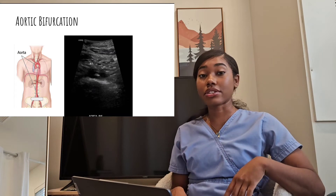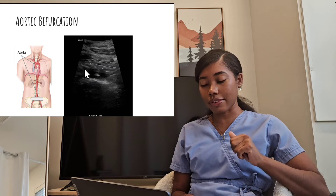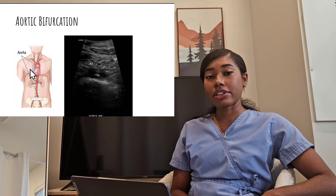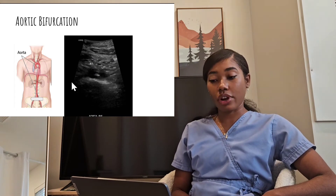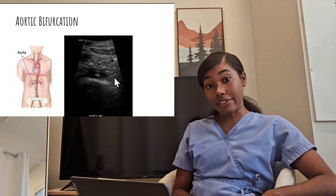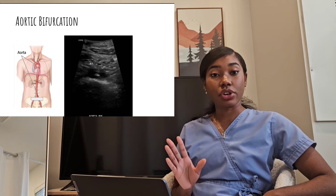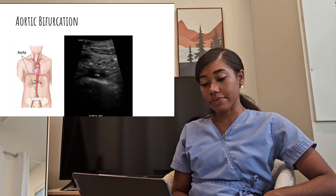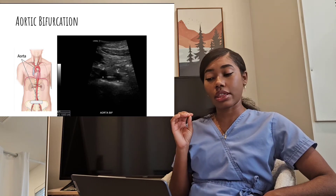Listen closely: the vessel on the left side of the screen is not the left common iliac artery — it's the right common iliac artery. The right side of the patient appears on the left side of the screen, and the left side of the patient appears on the right side of the screen. When I have my transverse image, I usually label which one is which — right and left — then measure the vessels in that same area.